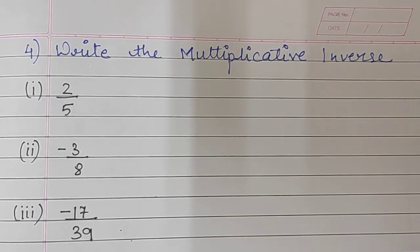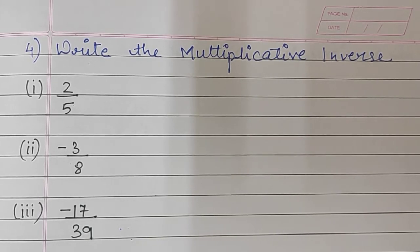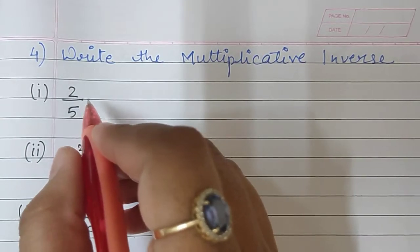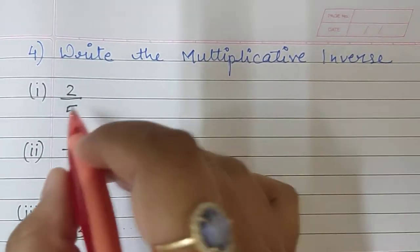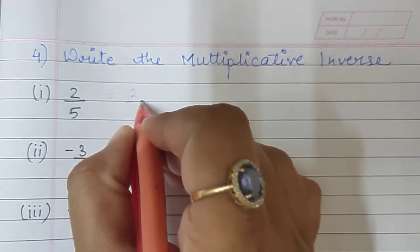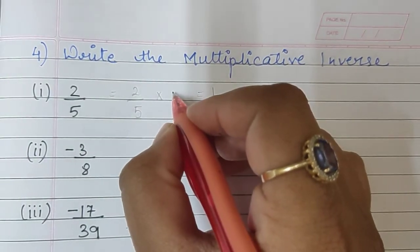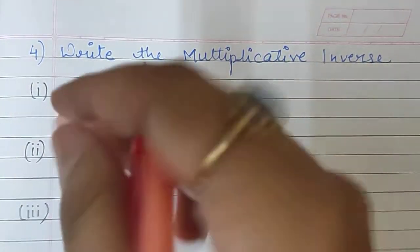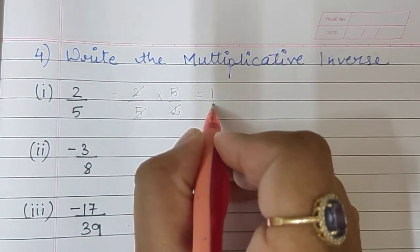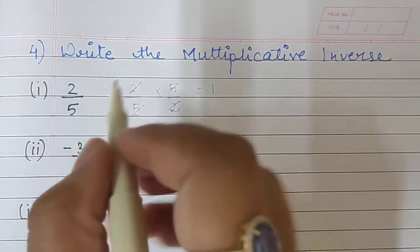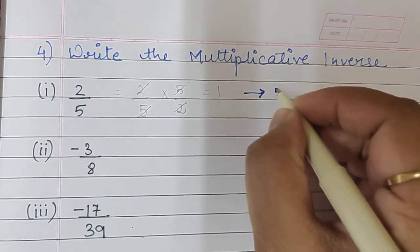The next question asks us to write the multiplicative inverse. Now what is a multiplicative inverse? I need to write a number such that after multiplying I get the answer 1. For example, if I have 2 upon 5, I need to find which number to multiply it by to get 1. I will multiply it by 5 upon 2 — that means I will write the reciprocal of the number. If I write the reverse, I can cancel them and get the answer 1. So the multiplicative inverse of a number is its reciprocal.